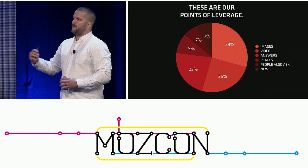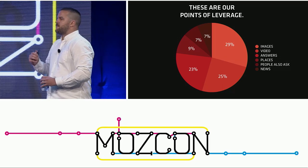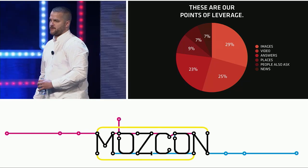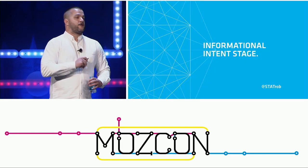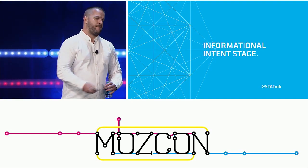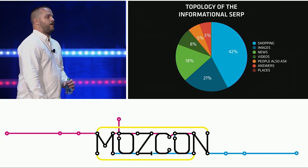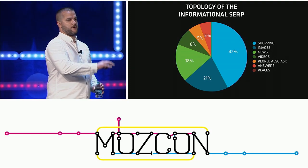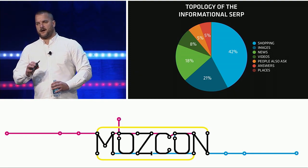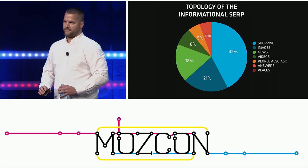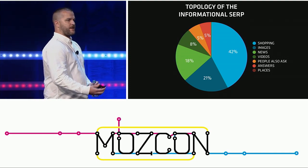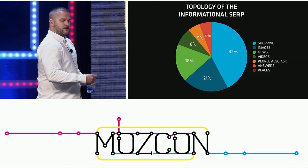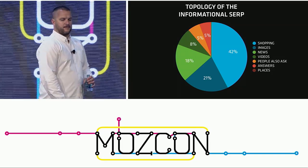I call these non-shopping result types our 'points of leverage' — the universal result types that allow us to go that extra mile toward meeting searcher intent on the basis of a strong organic ranking strategy. These are the result types that help our customers, give them truly useful experiences, cement our brand's utility, and provide great engagement signals for Google. Let's start with the informational stage and work our way through all three.